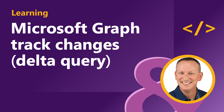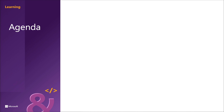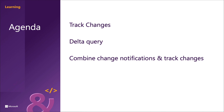In this section, we're going to learn how you can track changes to entities in a collection over time without writing code to detect which of these items has changed. This capability is provided as part of Delta Query and it's a feature in Microsoft Graph. We're also going to see how we can combine change notifications and track changes to really cut down the number of requests.